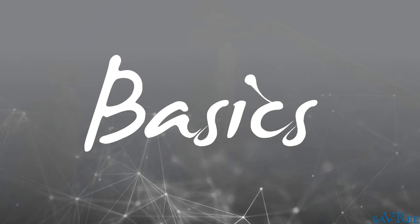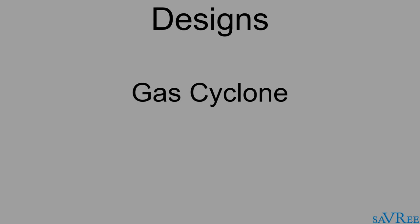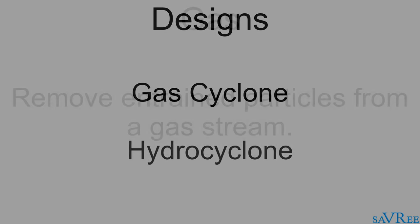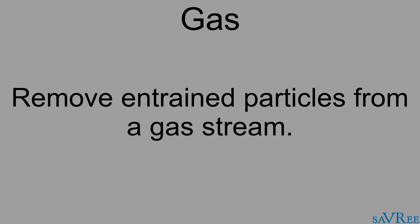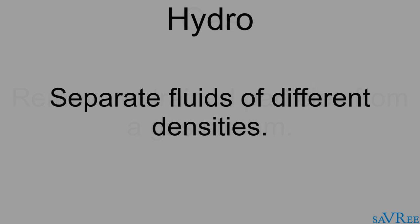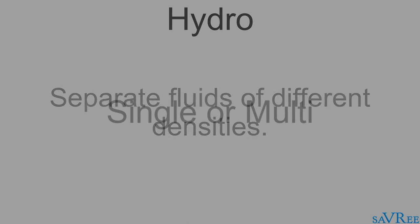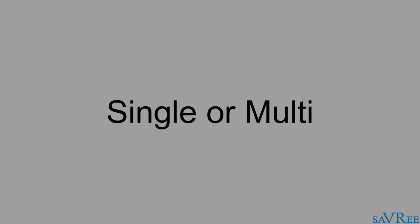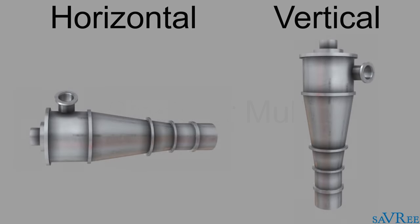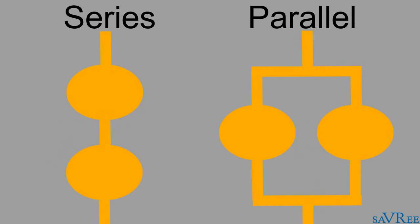There are two main designs of cyclone separator: the gas cyclone and hydrocyclone. Gas cyclones are used to remove and drain particles from a gas stream. Hydrocyclones are used for separating fluids of different densities. Cyclone separators can be installed as single units or in multiples, known as multi-cyclones. Separators can be installed with a horizontal or vertical orientation, and it is also possible to install cyclones in series or in parallel.